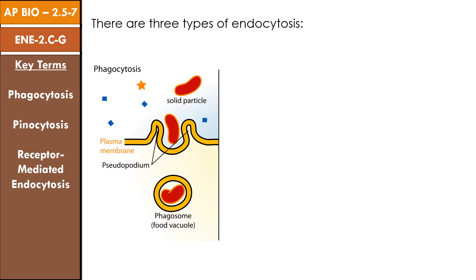In phagocytosis, also known as cellular eating, receptors in the cell membrane recognize a specific ligand on the surface of a large particle or even an entire cell. The binding of the ligand to the receptor causes the phagocytic cell to engulf the particle or other cell. Phagocytosis is restricted to specialized cells — for example, unicellular protists use phagocytosis for feeding, and some white blood cells use phagocytosis to engulf foreign cells and substances. The food vesicle, also called a phagosome, that forms usually fuses with a lysosome, where the vesicle's contents are digested.